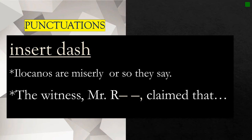Let's look at how the dash is inserted. Here, you have 'Ilocanos are miserly, or so they say.' You want to insert a dash here. This is the symbol for the dash. It looks like a wide letter H. So that's the symbol for a dash. You might be wondering, what are the two M dashes for? We actually use this to indicate missing portions of a word, whether unknown or intentionally omitted. For this one, you have the name of a witness, and you don't want to reveal the name. So you use two M dashes to omit the name.